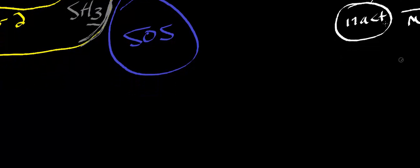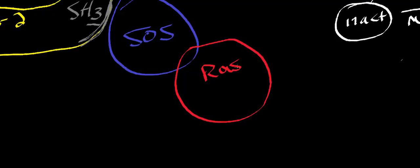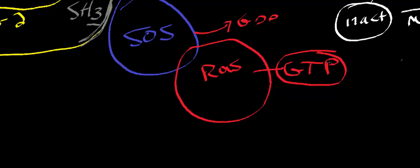The protein SOS is going to act on is called RAS. RAS is a G-protein — it's a molecular switch, usually found somewhere in biosignaling pathways. When RAS gets activated, it effectively activates other proteins, usually kinases. So when SOS gets activated by binding to the SH3 domain of GRB2, SOS activates RAS by causing it to bind GTP, and then RAS becomes activated. When RAS becomes activated, it binds another protein — a kinase.